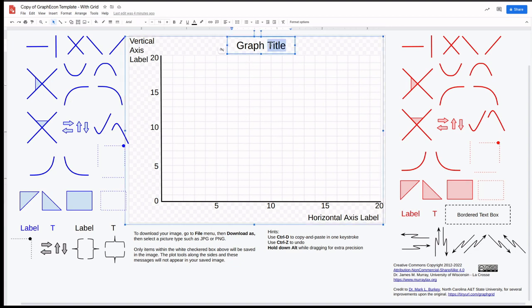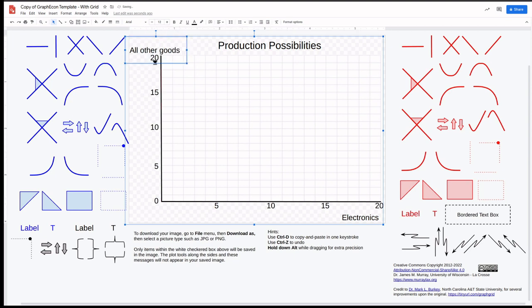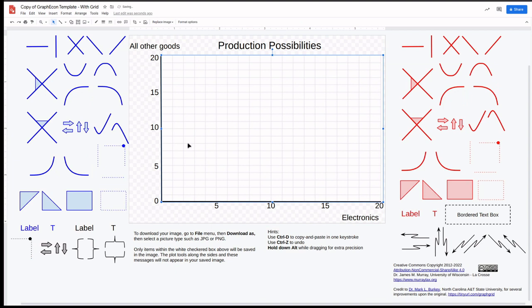I'm going to produce a Production Possibilities Frontier, so let's change my axis title to Production Possibilities. I'm going to resize that so it takes up only one line. Let's call my horizontal axis label Electronics, category of goods. And let's call my vertical axis label All Other Goods. I'm going to stretch that one out and maybe move it up a little bit.